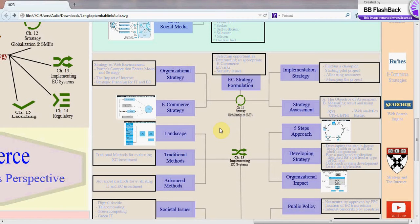Now we go to implementation strategy. You have to find a champion and start a pilot project. You have to locate resources and manage the project. For strategy assessment, first you need the objective of assessment, and second you need to measure results and use metrics like KPI, CPM, BPM, Web Analytics, and Web Metrics.